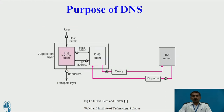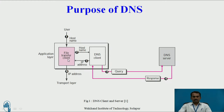This is the purpose of why we use DNS. In this diagram, I am going to explain how the client can send the request and how the server can assign an IP address to the client request. This user can send the host name to the file transfer client. The file transfer client collects the information from the user, then sends it to the DNS client — that is, the host name received from the user is sent to the DNS client.